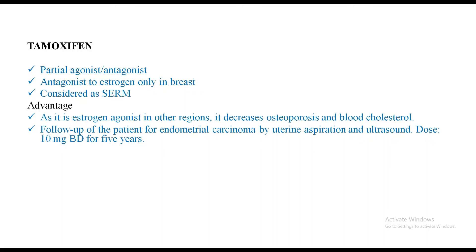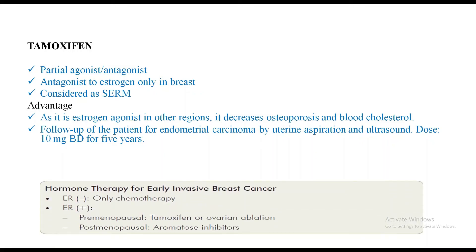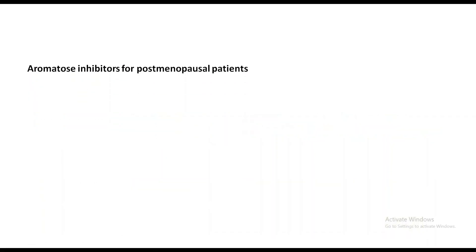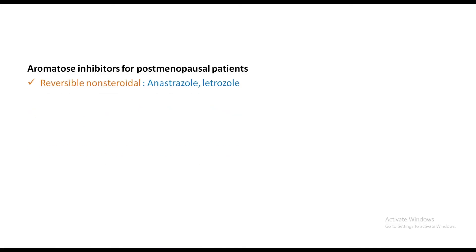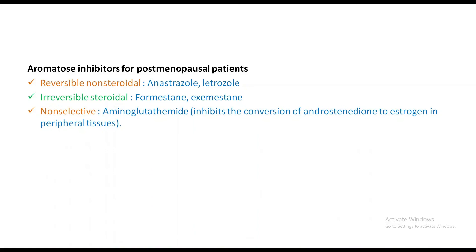Tamoxifen, as an estrogen agonist elsewhere, decreases osteoporosis and blood cholesterol. Follow-up of the patient for endometrial carcinoma — uterine aspiration and ultrasound. Dose of Tamoxifen is 20 mg BD for 5 years. For hormonal therapy: ER negative — only chemotherapy; ER positive premenopausal — Tamoxifen or ovarian ablation; ER positive postmenopausal — aromatase inhibitors. Examples of aromatase inhibitors: reversible nonsteroidal — anastrozole and letrozole; irreversible — formestane and exemestane; non-selective — aminoglutethimide, which inhibits conversion of androstenedione to estrogen in peripheral tissue.